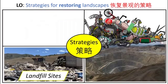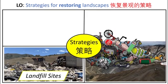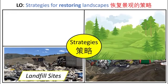A final strategy for restoring landscapes is by creating landfills. Landfill sites are often used in old mines because mining naturally creates large craters in the ground which can be filled with domestic waste. Once the crater is filled up, it can then be covered with topsoil, and vegetation can be grown there — similar to the strategies mentioned before.